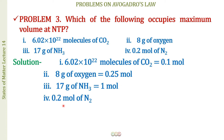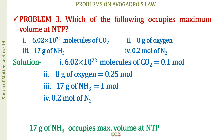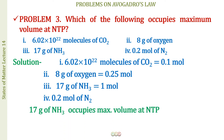Now compare the moles: whichever has the maximum number of moles will have the maximum volume at NTP, since moles are directly proportional to volume. So 17 g of ammonia, being 1 mole, occupies the maximum volume. These questions test your understanding of the mole concept.